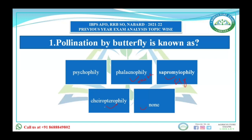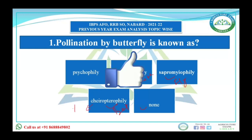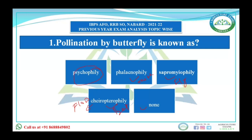Chiropterophily is pollination done by bat. The flowers that open at night are bat-pollinated. The one remaining option is psychophily, and this is the pollination done by butterfly.